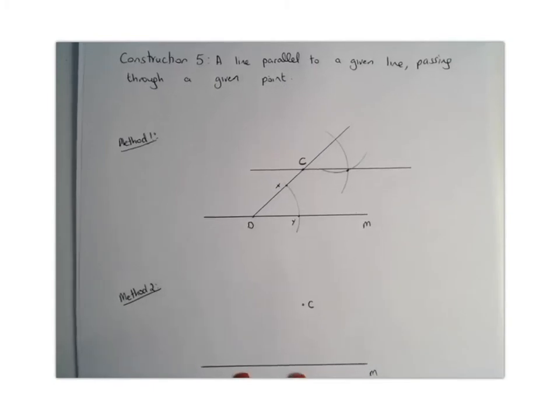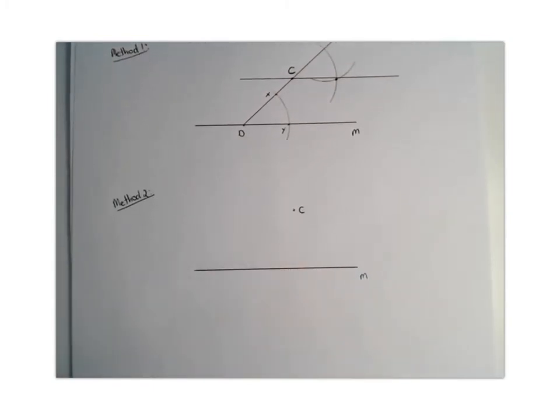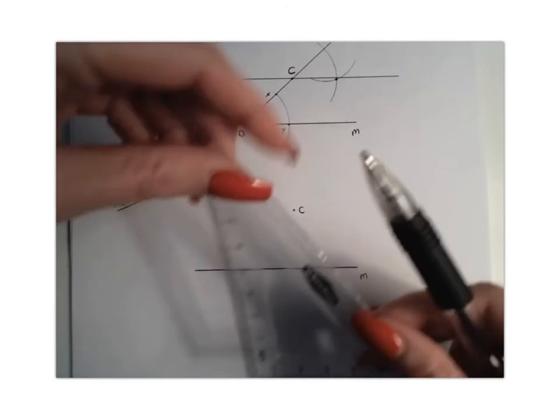Now, method number two, as I said, is where we're going to use our set squares. So what you're going to do to begin with is you're going to use your set square, and you're going to draw a perpendicular line through C to the line M.